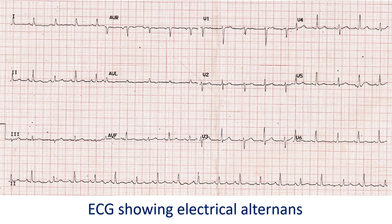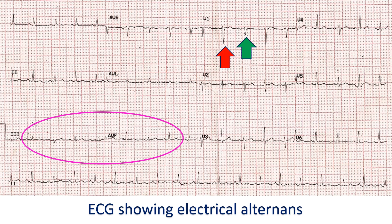ECG, the electrical recording of the heart, shows low voltage complexes in pericardial effusion. This is because the fluid surrounding the heart prevents good conduction of electrical signals to the body surface. When the heart swings in the pericardial cavity due to a large amount of fluid in cardiac tamponade, alternate complexes in the ECG can be seen as taller and shorter. This is known as electrical alternans.